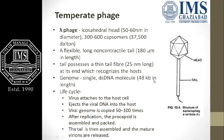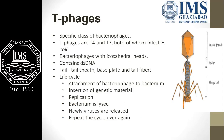Lambda phage's genome contains a single double-stranded DNA molecule which is around 48 kb in length. Temperate phages basically perform the lysogenic type of life cycle, meaning they are non-virulent, whereas T-phages are virulent — infectious — types of phages.